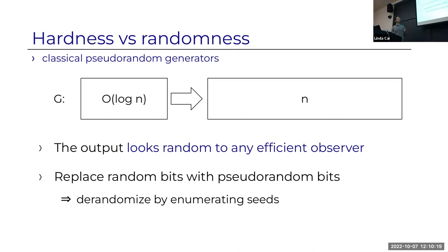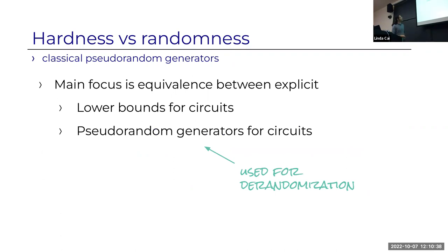The classical setting: if we want to generate n pseudorandom bits, we ideally want a seed that is logarithmic in length—so short we can enumerate over it, and this is how we do derandomization. The main focus in this classical line of work is proving an equivalence—a total characterization—between lower bounds for non-uniform circuits and PRGs for non-uniform circuits, which we then use for derandomization, for example to show BPP equals P.